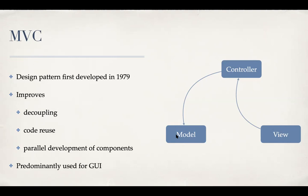For example, continuing with the student app example, if you have updated someone's grades or allowed someone to update their address, that happens on the view — you type in the address and click the submit button. So the controller is invoked from the view, and then the controller calls the setter method for the address. After that change has happened, the change should be reflected back on the view. The controller then calls some sort of an update method which updates the view to match the model. That's a very typical cycle of changes in the MVC pattern.